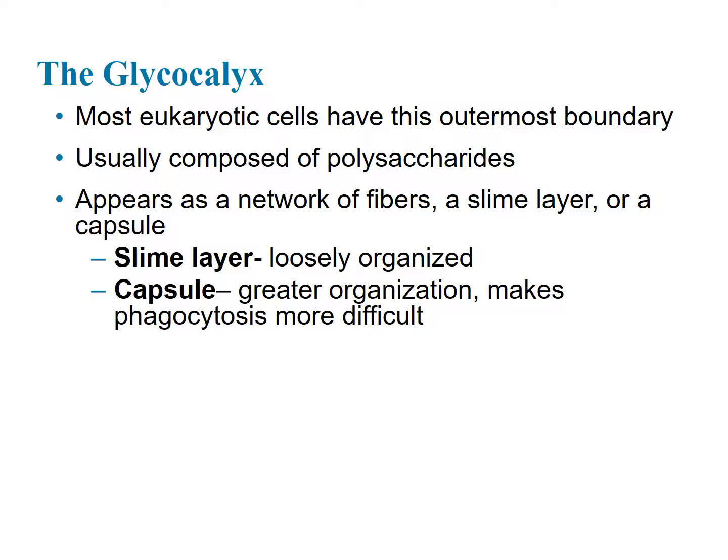The water held by the slime layer is also available for the underlying cell. The capsule is more of a protective covering — by being there, it makes it difficult for other cells to eat them through phagocytosis. Phagocytosis means cellular eating: big cells eat small cells, big protists eat small protozoa, amoeba eat anything smaller than them. Having a capsule makes it hard to eat — it's like a crunchy outer shell.